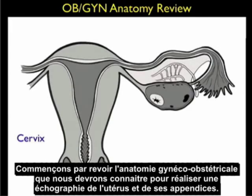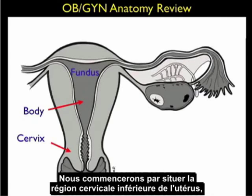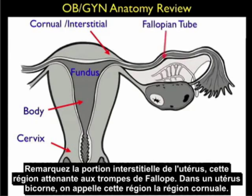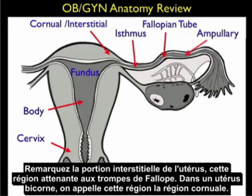Let's begin by reviewing the OB/GYN anatomy that we'll need to note to perform bedside ultrasound of the uterus and the adnexa. We'll begin by locating the lower cervical region of the uterus, the portion above that — the body — and the fundal region of the uterus above the body, which is where we define an intrauterine pregnancy to be located. Notice the interstitial region of the uterus, that region that abuts the fallopian tube. In a bicornuate uterus, this is known as the corneal region.